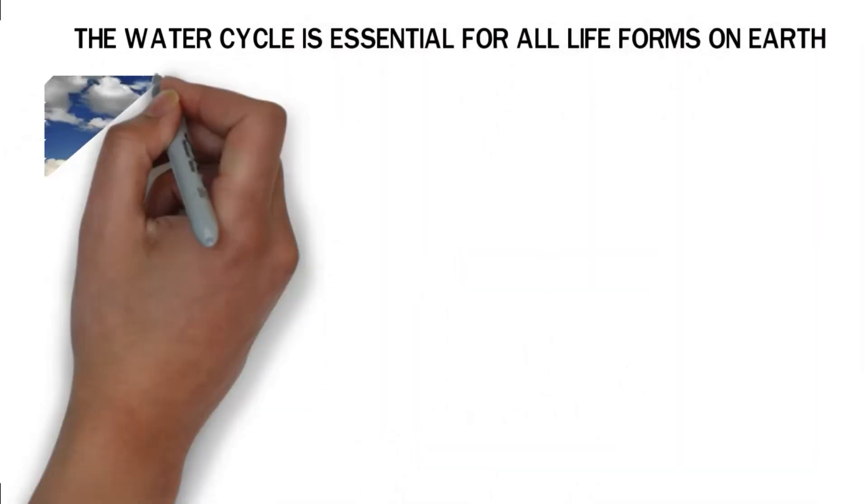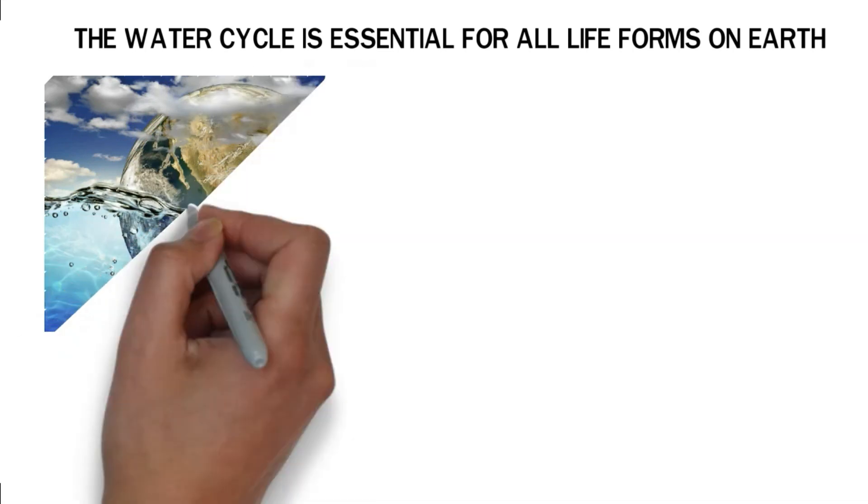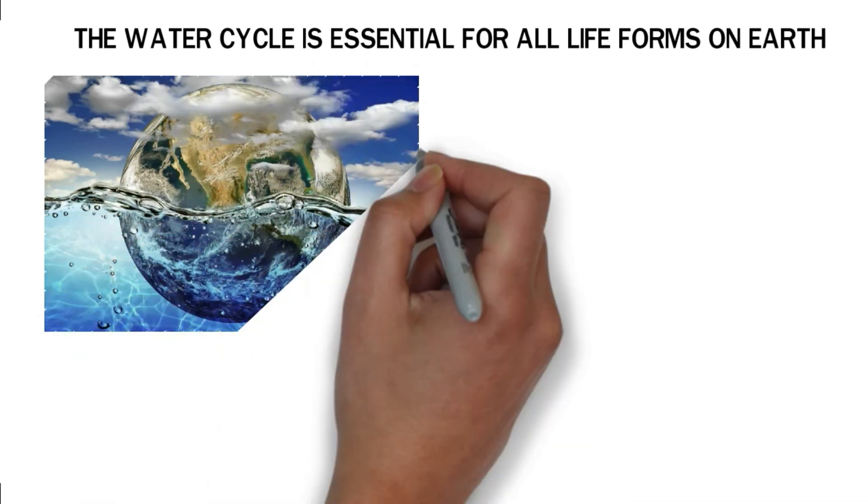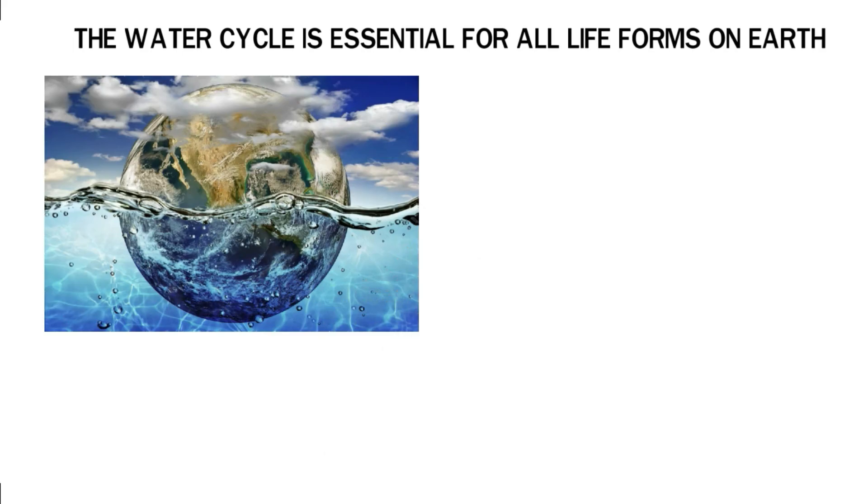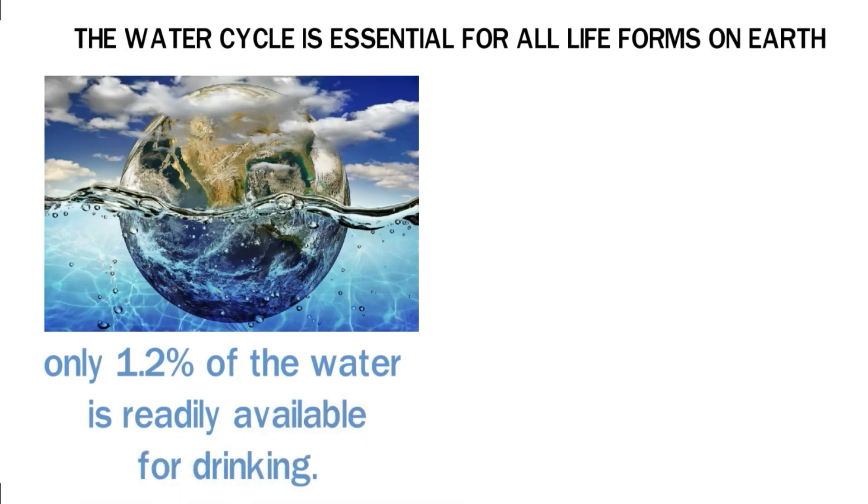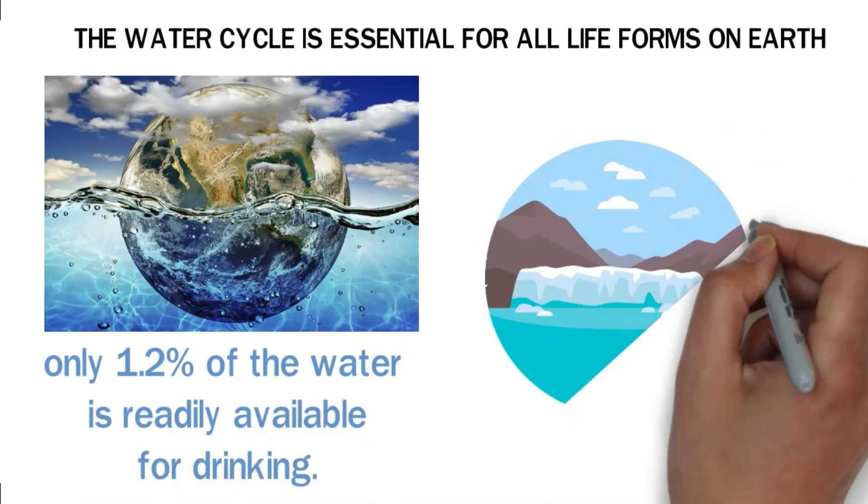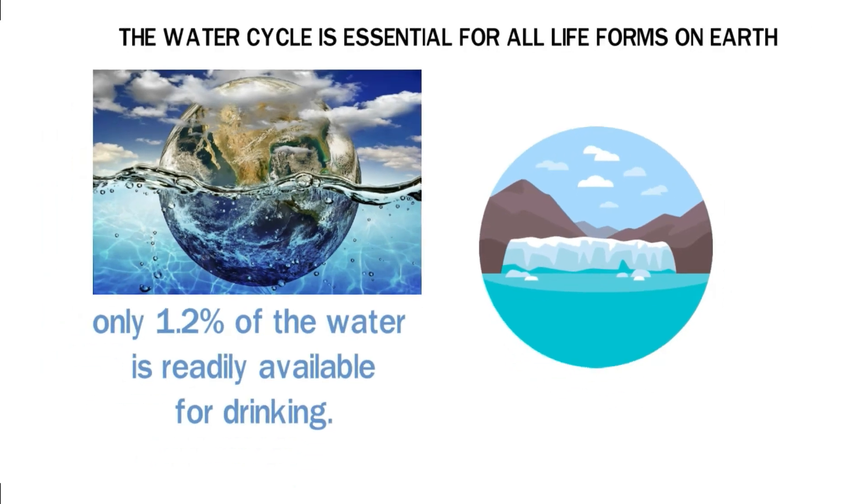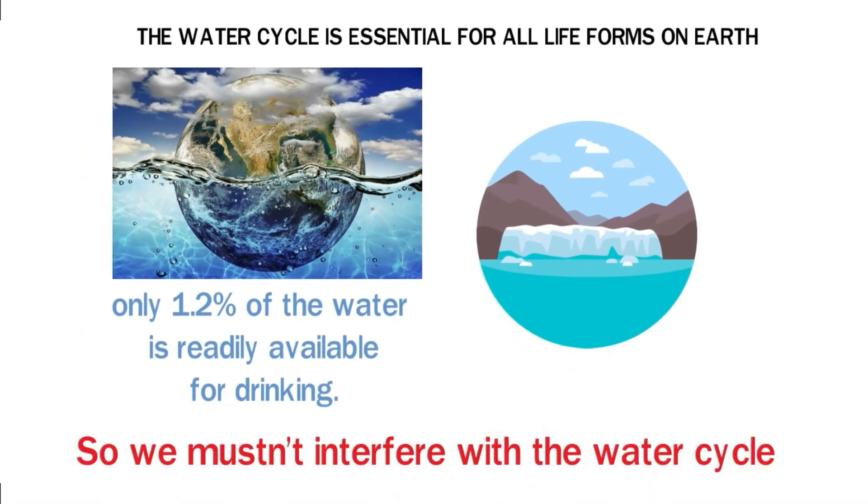The water cycle is essential for all life forms on Earth. Without the water cycle, the Earth will run out of fresh water in a matter of days. Besides, only 3% of the Earth's water is considered fresh. Out of this percentage, only 1.2% of the water is readily available for drinking. The remaining percentage of water is still locked up in ice caps and glaciers, so we mustn't interfere with the water cycle.